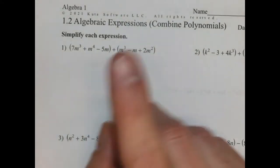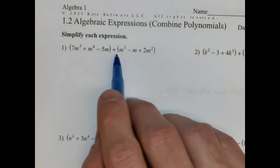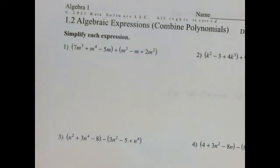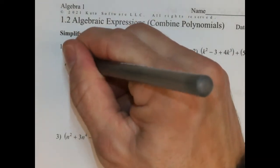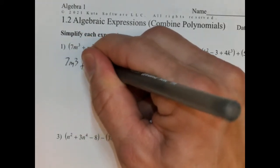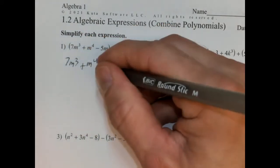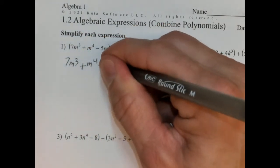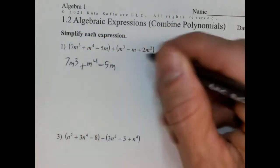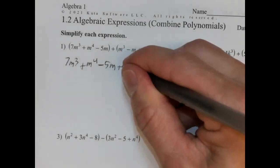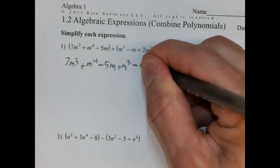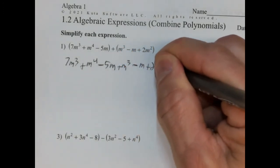Before we do that, there's a plus sign here, which means no signs are going to be changed. So what I'm going to do is actually just rewrite this without the parentheses. So 7m cubed plus m to the fourth power minus 5m. And because this is a plus sign, nothing changes here. So plus m cubed, because it's a positive m cubed, minus m plus 2m squared.